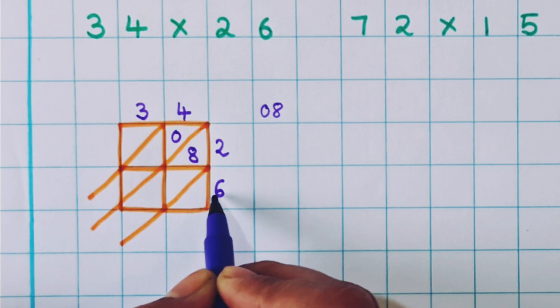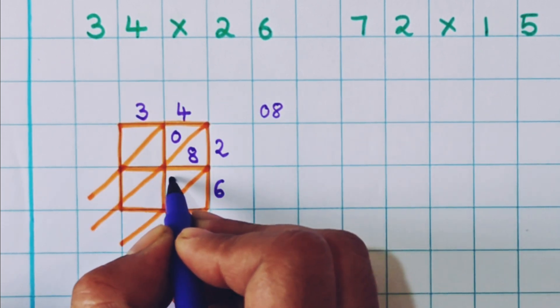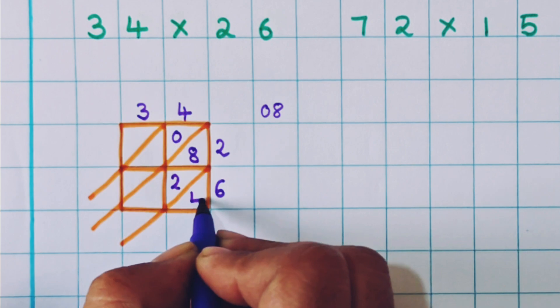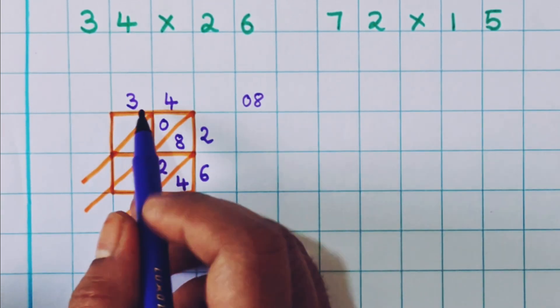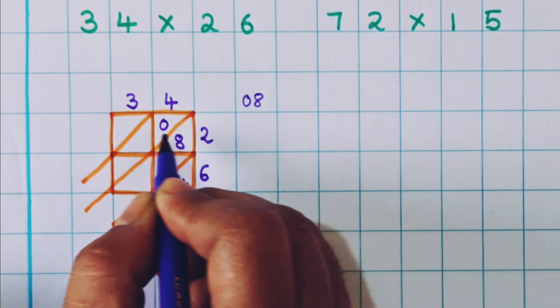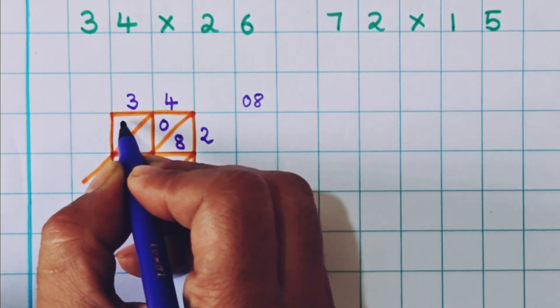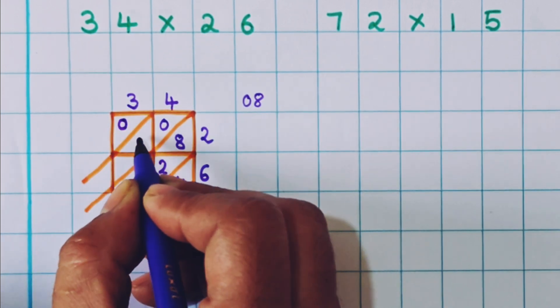Now four sixes are how much? 24. So 2 I will write here and 4 I will write here. Now let's do the multiplication using this number. Three twos are six. So again we will write here 0 and 6.